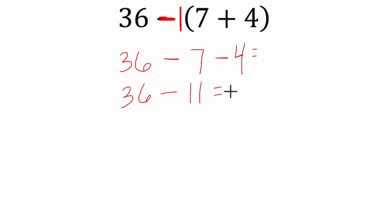In both cases we get the same answer. In the second case, 36 minus 11 is 25. Here 36 minus 7 is 29 and then subtract 4 more is also 25. Alright. Hope this helped. Thank you.